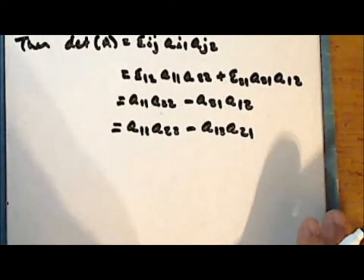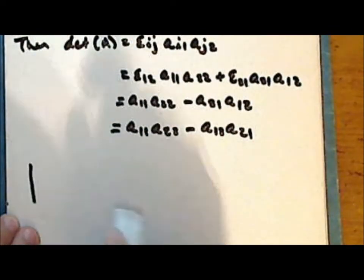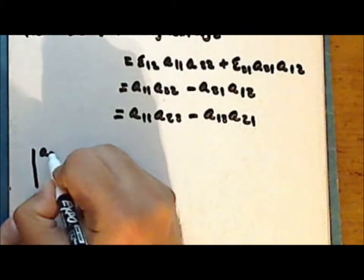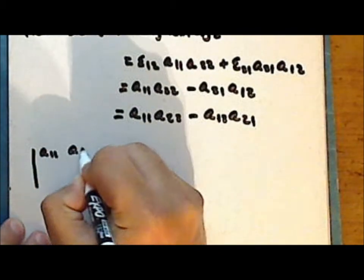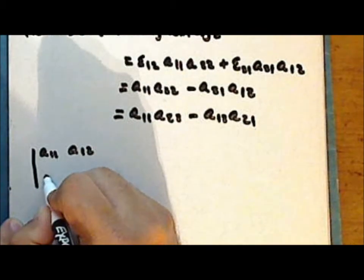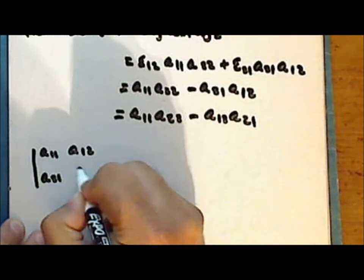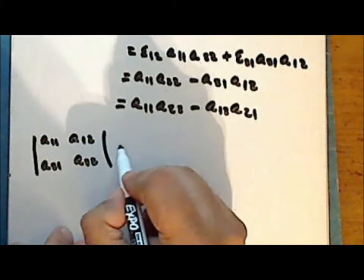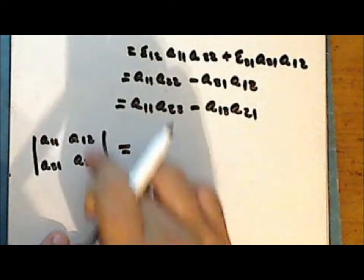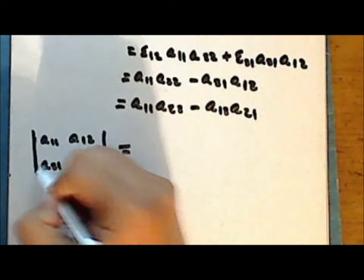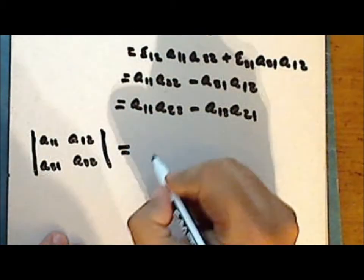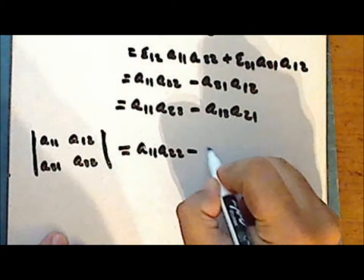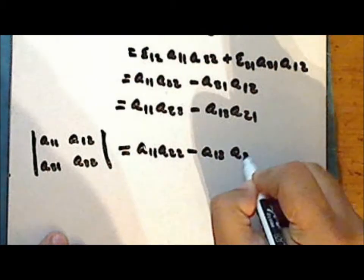Notice that this gives us a simple way to determine the determinant of a 2 by 2 matrix. The determinant is simply the difference of the diagonal products: A sub 1,1 times A sub 2,2 minus A sub 1,2 times A sub 2,1.